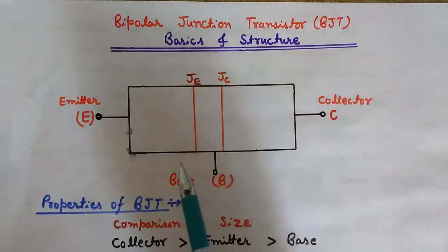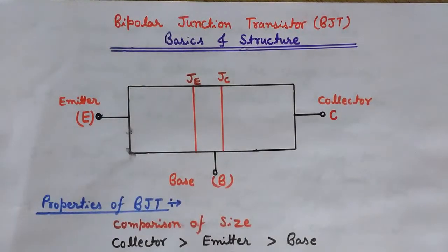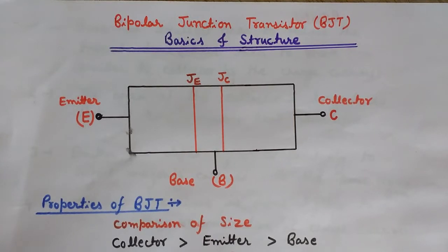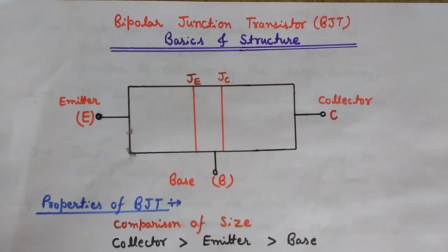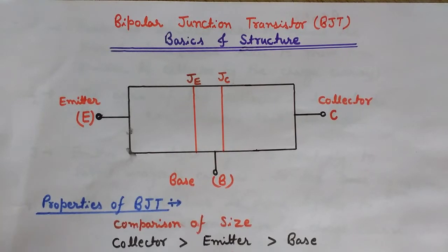BJT is known as bipolar because it has two types of carriers — electrons and holes. In case of Field Effect Transistors and MOSFETs there is only one type of majority carrier, either holes or electrons. But in BJT we have both majority and minority charge carriers, that is electrons and holes both. It has two poles because holes are positively charged and electrons are negatively charged — that's why it is called bipolar.